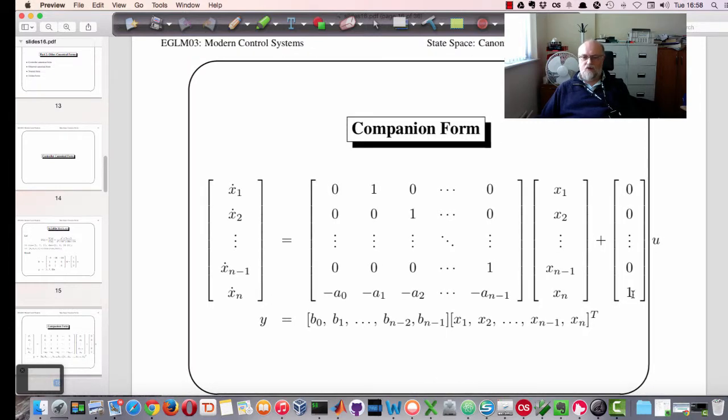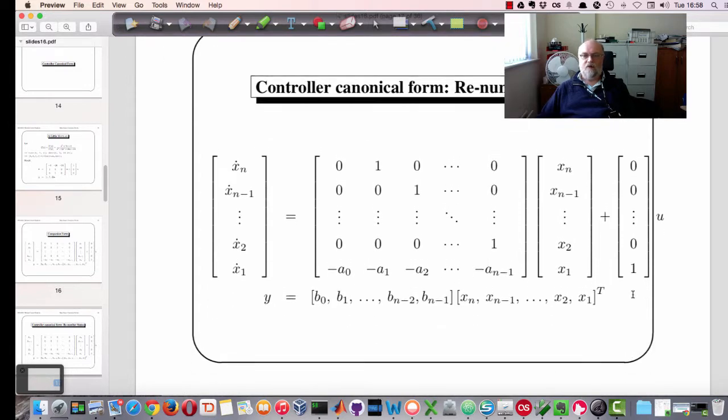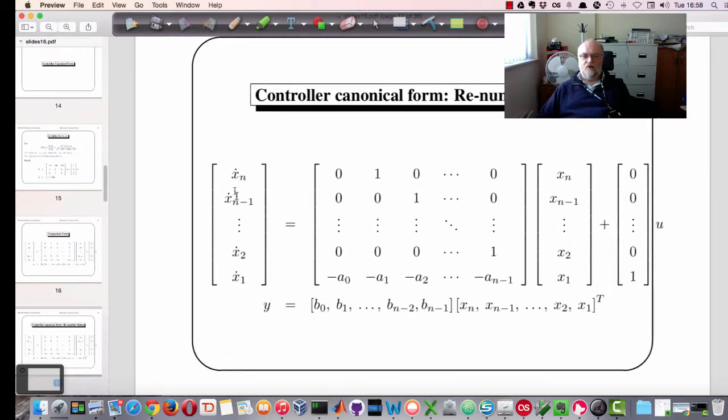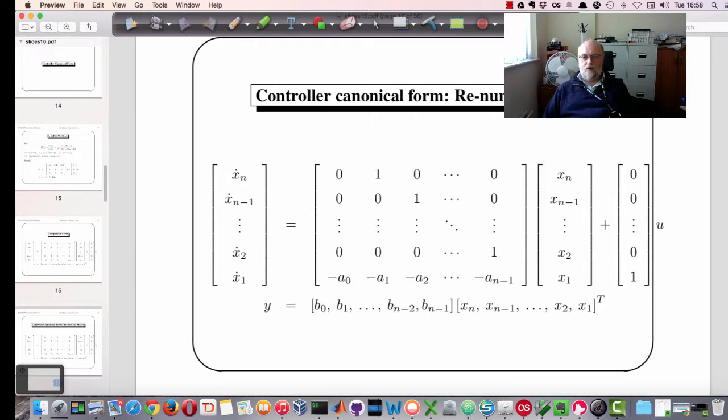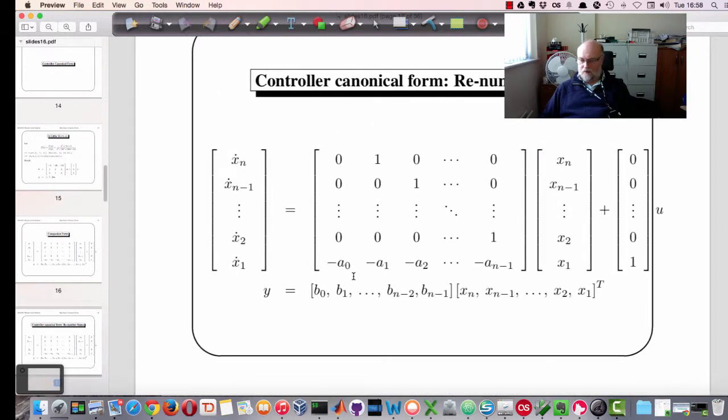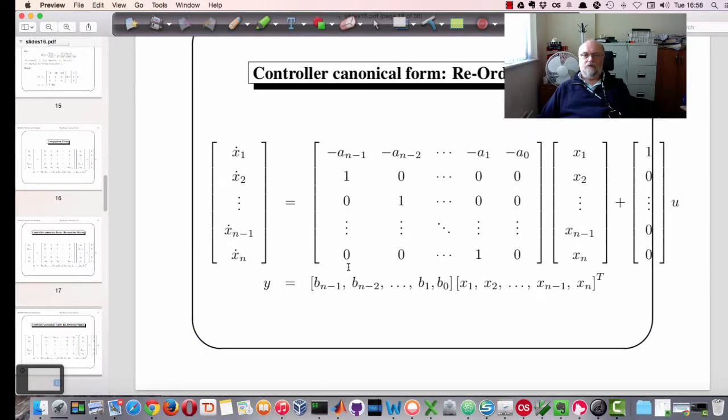If we were to reorder this, so renumber the states, instead of going from x1 to xn, we went from xn to x1, these would swap around. So the order would change. We'd go now ascending powers. And then if we put that into the right form again, so xn x1 dot is x2 and so on, then this is the form we get.